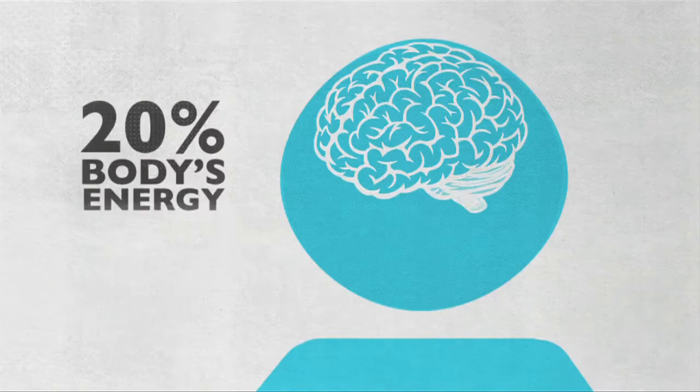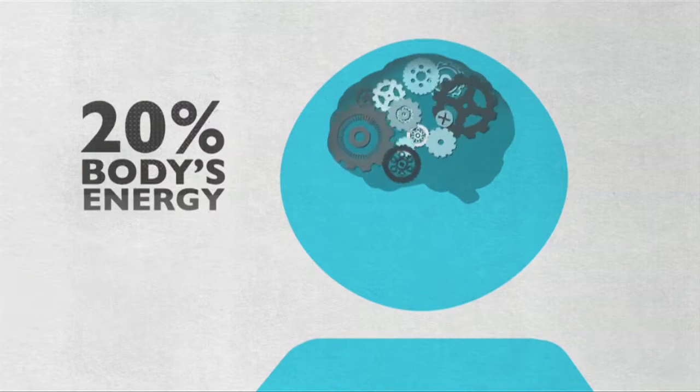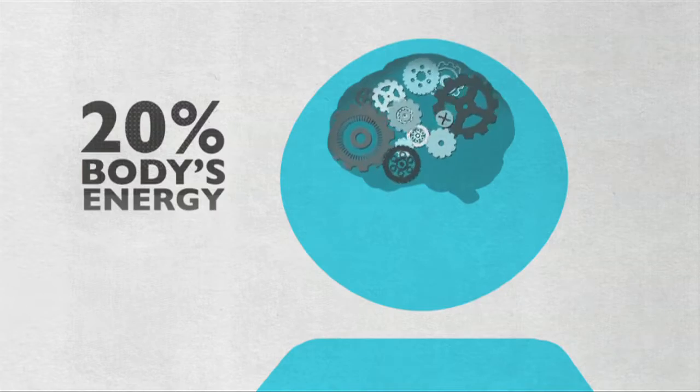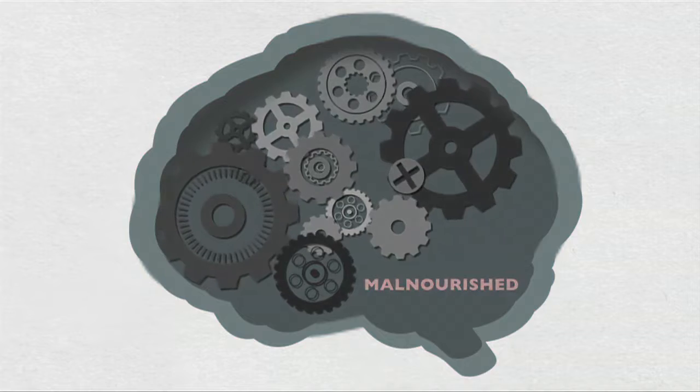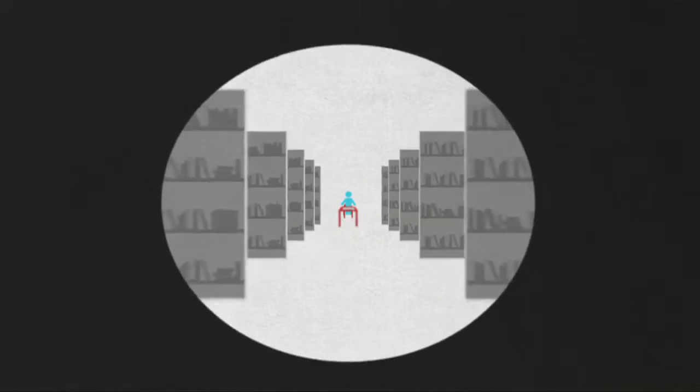For instance, a healthy brain uses 20% of the body's energy, and that energy comes from, you guessed it, food. When a child is hungry, the brain is starved. The result? Malnourished kids fall behind in school because they can't concentrate.